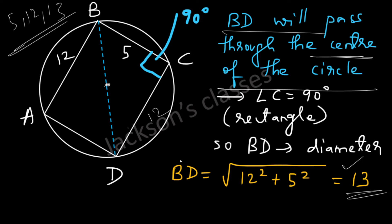Now BD is the diameter and we have found that BD is equal to 13. So the radius will be equal to 13 by 2 and the area will be πR² which is π times (13/2)².